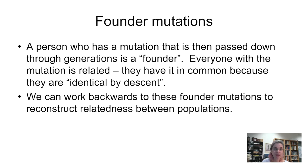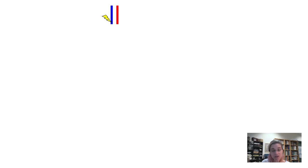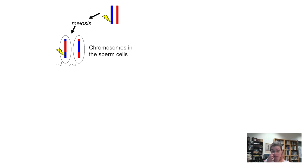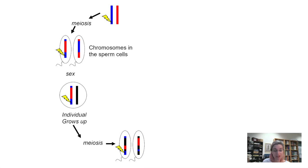Let me walk you through a little hypothetical. So we have an individual with one chromosome — they are diploid, so they have two copies: a blue one and a red one. They get a mutation in that blue chromosome. Meiosis happens, you get recombination, and that mutation is still there in one of the sperm cells. Sex happens with a black chromosome, and here is your new chromosomal composition.